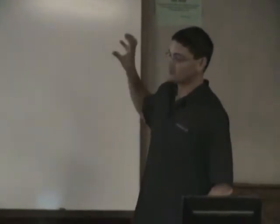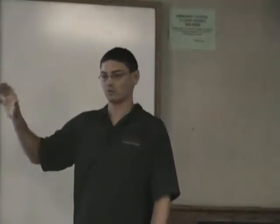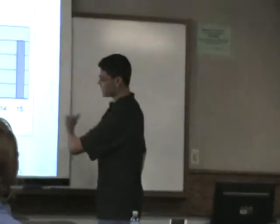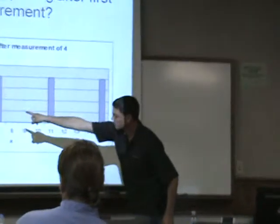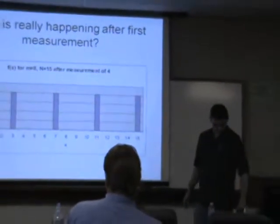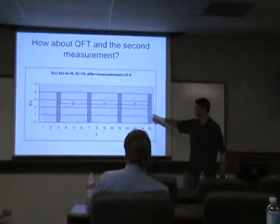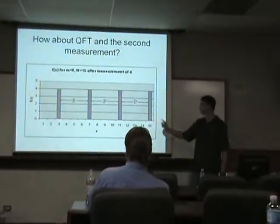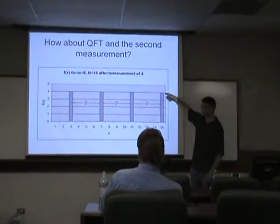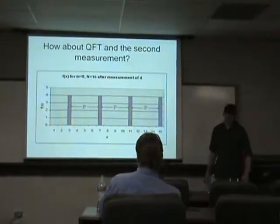So what really happens after we measure the second register with the answers, it collapses down to that one answer, is all our possible values of x are then just collapsed down to here. And you can see how in these results, the next slide, we can tell what the period is from these, because they're all the same value, 4 in this case.